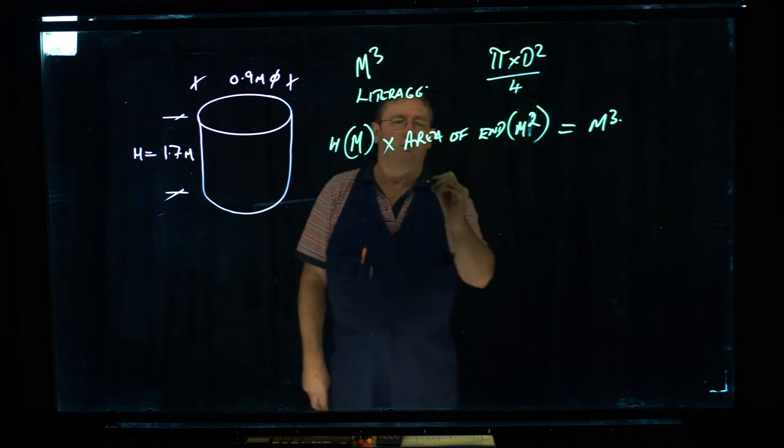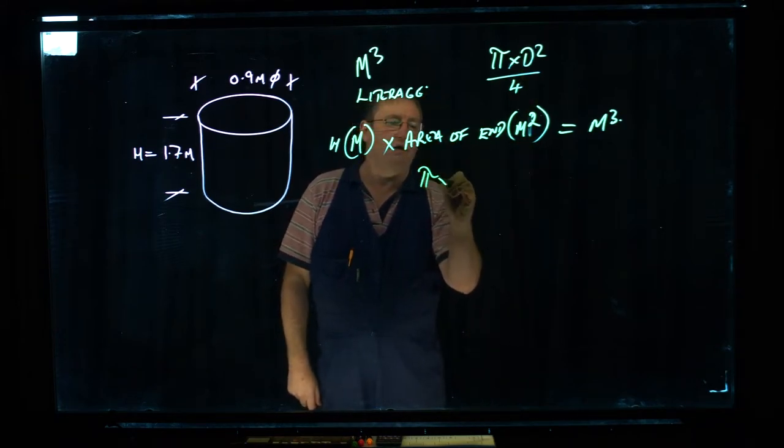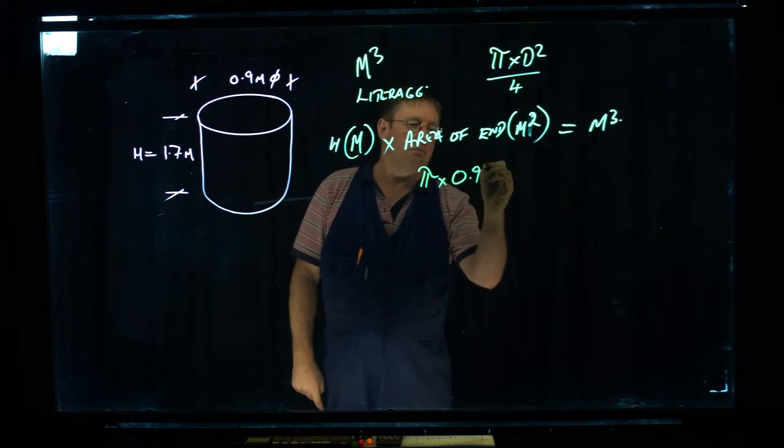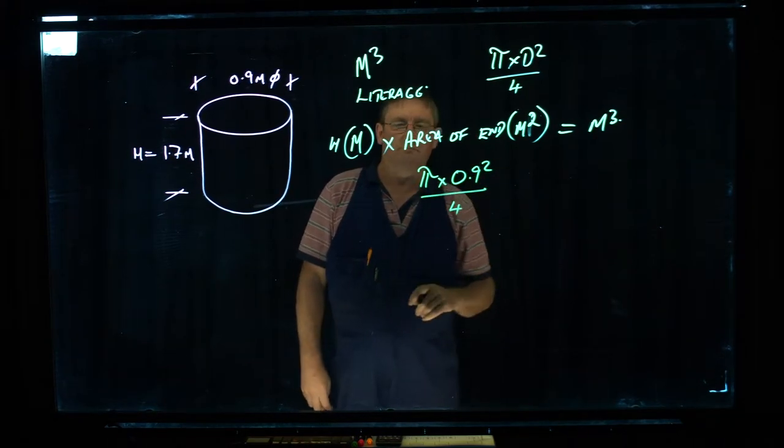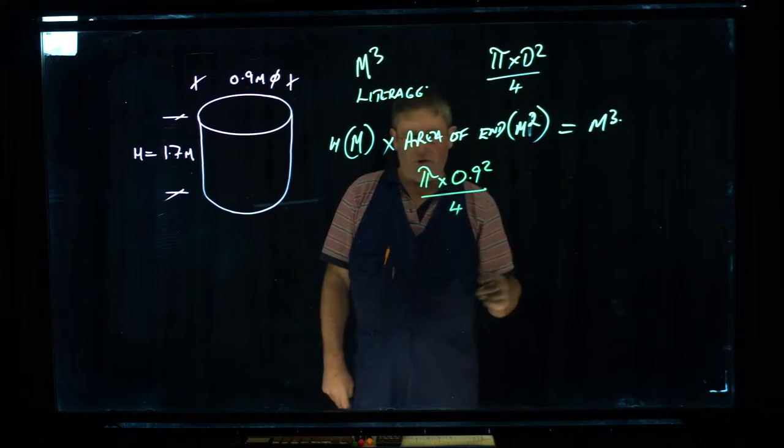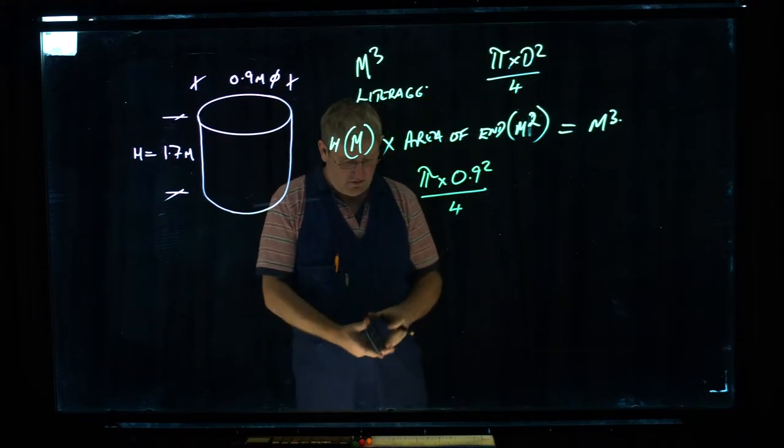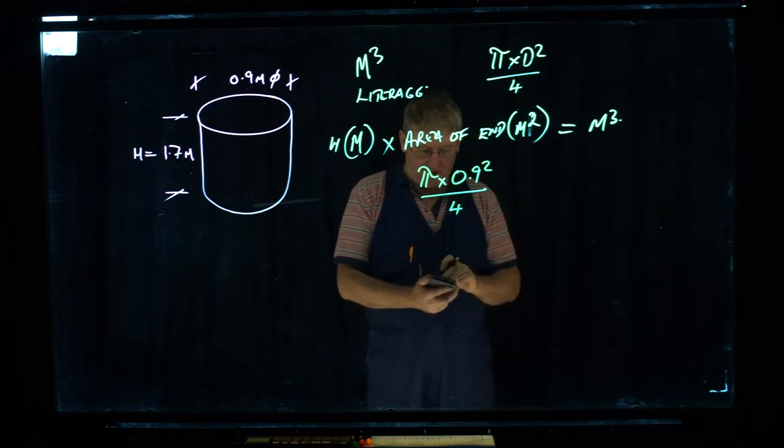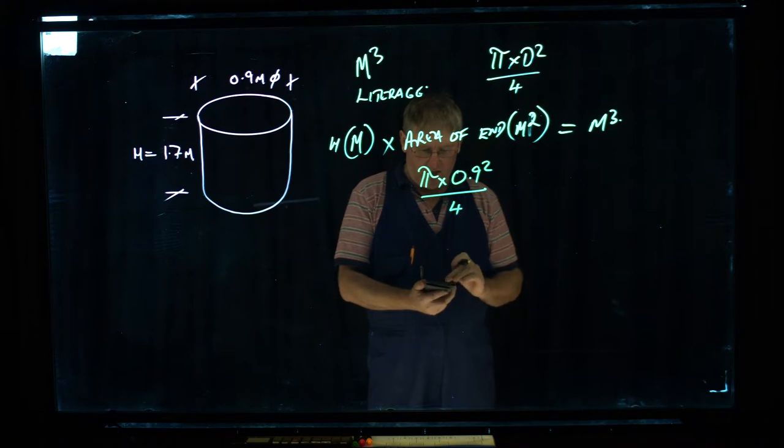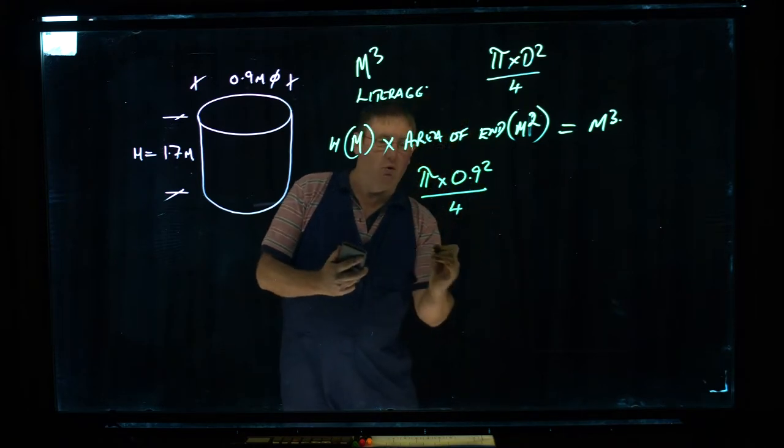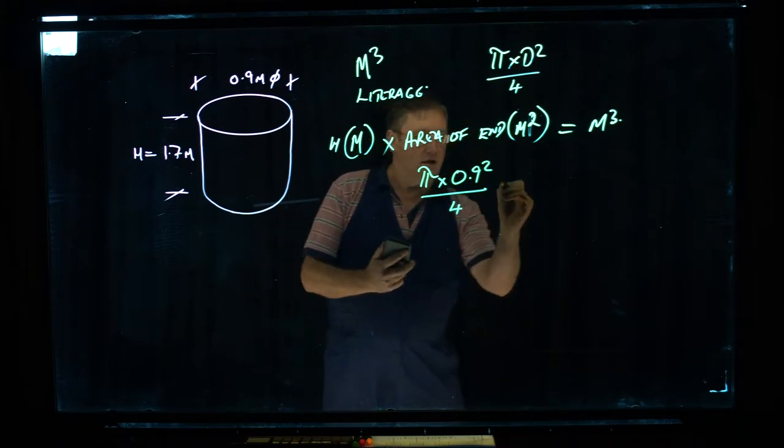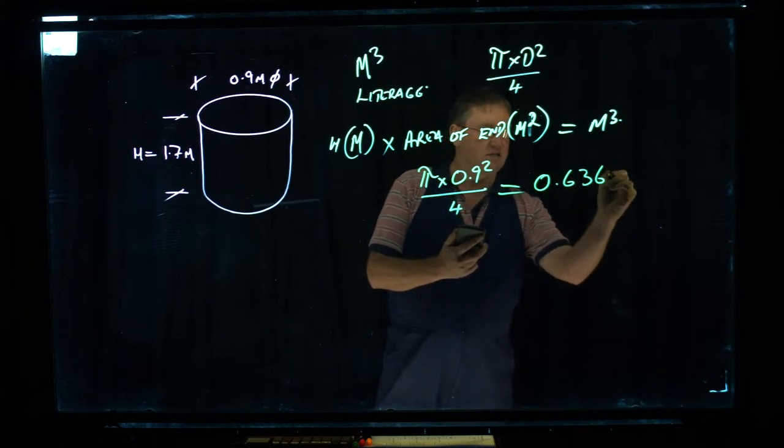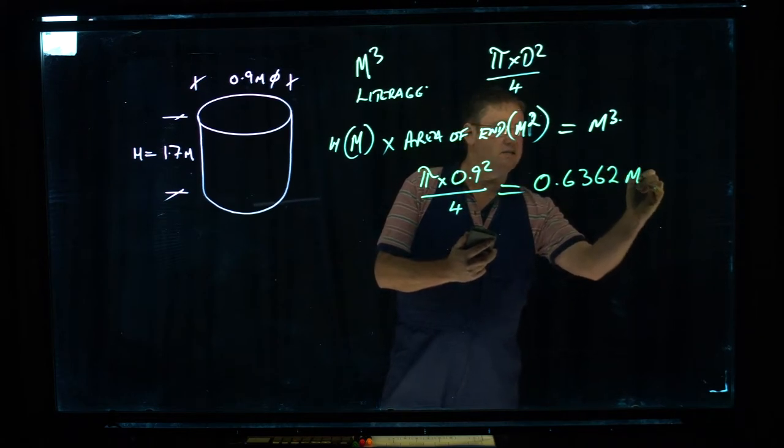So into this equation here we've got pi times 0.9 metres squared over 4. And if we do that on the calculator, so we've got pi times 0.9 squared divided by 4 equals. At that point I'm going to write it here so we get 0.6362 metres squared.